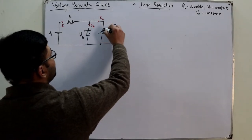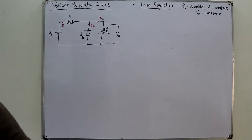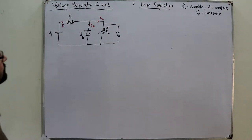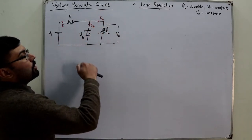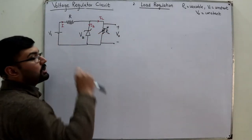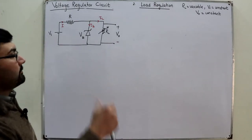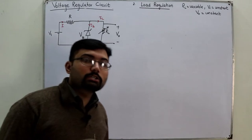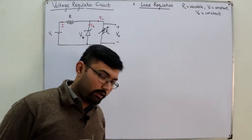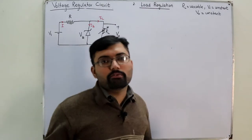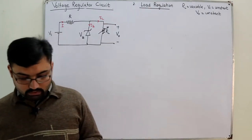When the load resistance RL is too small, the voltage across it is almost zero, which means the voltage across the Zener diode is also almost zero — so the Zener diode will not turn on. Therefore, you must find a minimum value of RL for which the diode turns on. Since RL is variable, it will have minimum and maximum values.